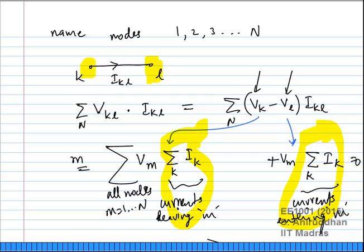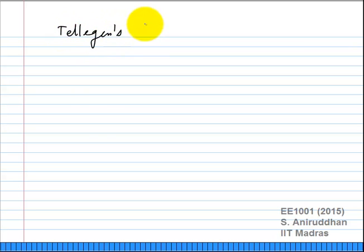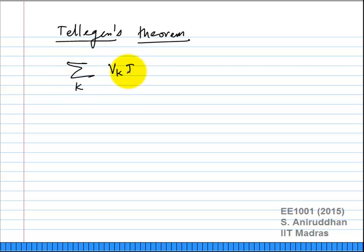Go back and think about this: the basic idea is to move the focus away from the branch to the node, and then apply the above steps. This theorem is called Telegan's theorem. It states that if you take any graph and sum V_k times I_k over every branch, that sum equals zero. This is straightforward to prove using just KVL and KCL.